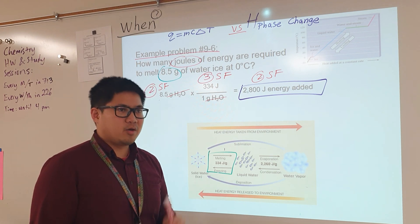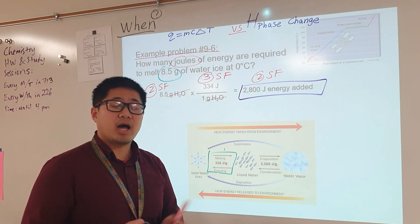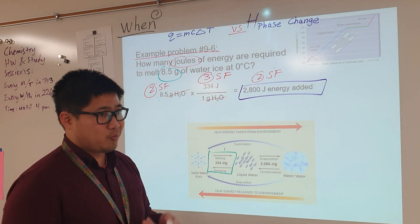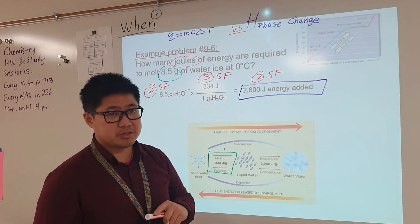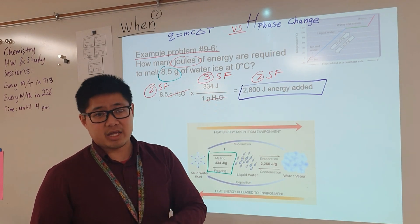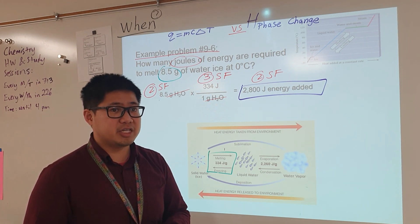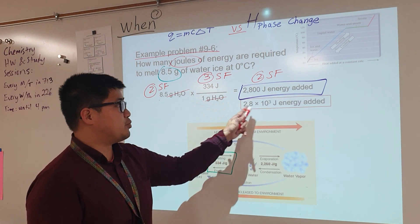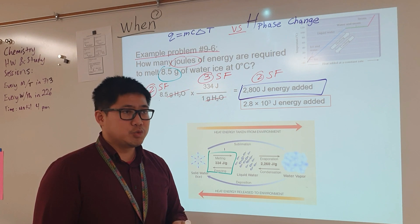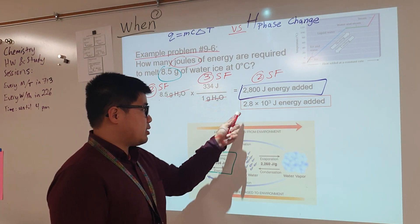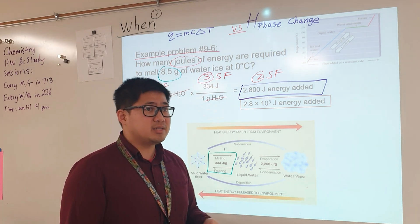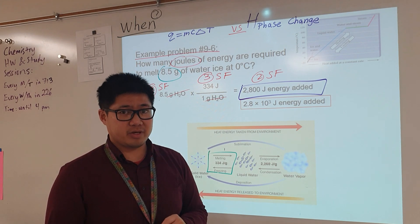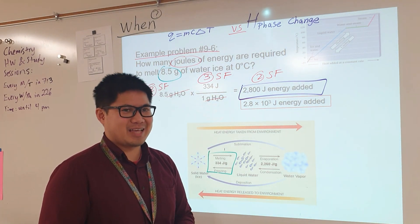A little ninja edit. We stopped when we boxed our answer, 2800 joules of energy added, locked in two sig figs. But we forgot something. What if we want your answer in scientific notation? We're going to make sure we still keep our answer at two sig figs. Your answer in scientific notation should be 2.8 times 10 to the 3 joules of energy added. Still two sig figs. All right, thank you guys for watching.